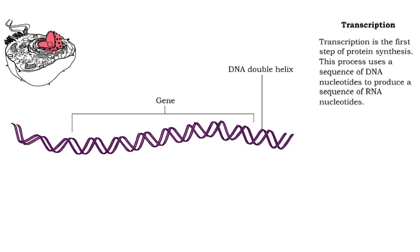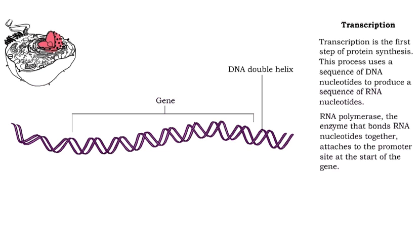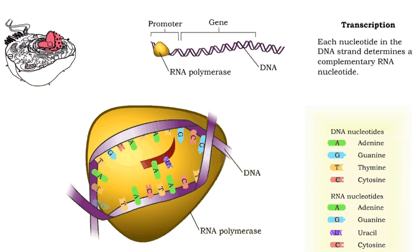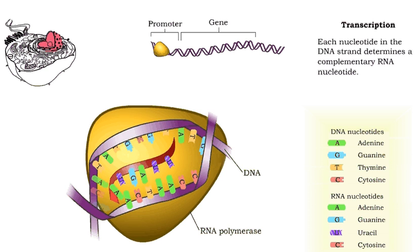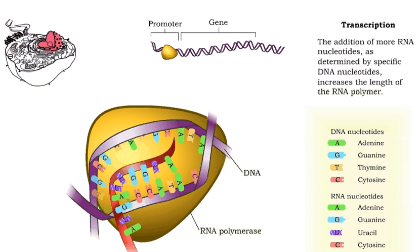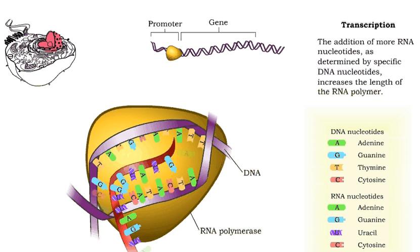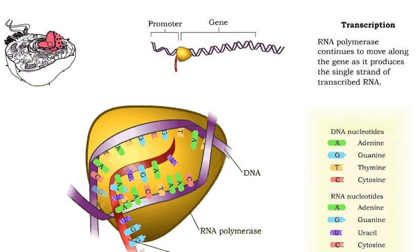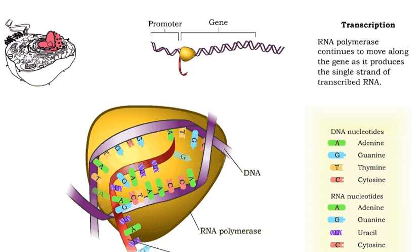Transcription, the first step of protein synthesis, results in the production of a sequence of RNA nucleotides. RNA polymerase is the enzyme that forms a sequence of RNA nucleotides. The exact nucleotide sequence of DNA in a gene determines the sequence of RNA nucleotides. RNA polymerase reads the DNA nucleotide to add an RNA nucleotide to the growing RNA strand, and continues to move along the gene as it produces the RNA strand.